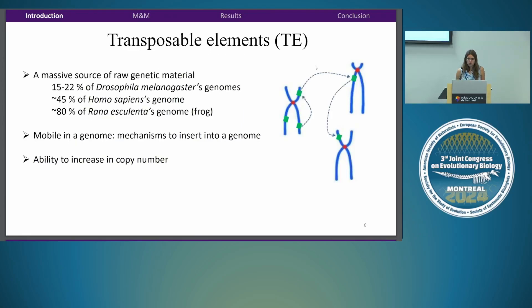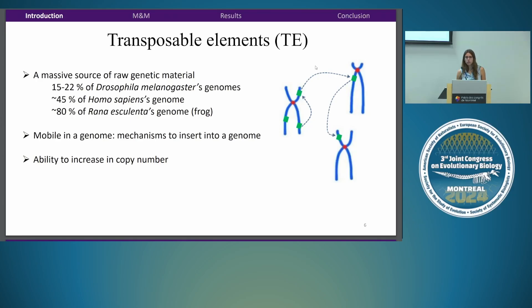How do transposable elements transfer so much compared to genes? First, they are a massive source of genomic material, so by chance there is quite a high probability that what is transferred is a transposable element. Second, transposable elements are mobile in a genome, so they have mechanisms to insert at different locations of a host genome — they could use those same mechanisms to insert into a new host genome. Third, transposable elements can increase in copy number when they arrive in a new host genome, making it difficult for the host to get rid of them.